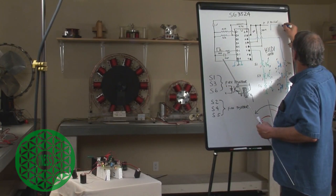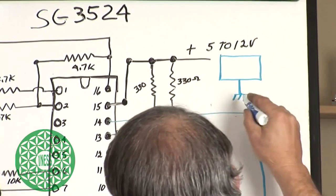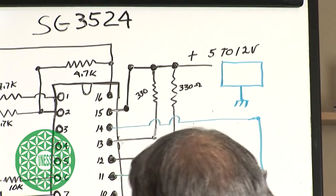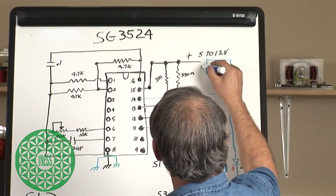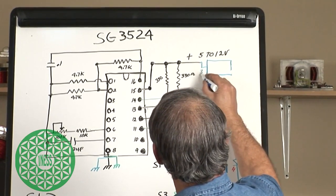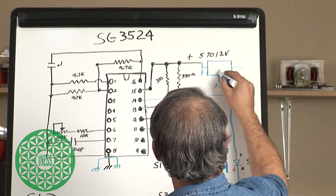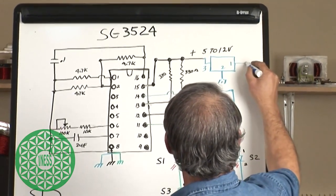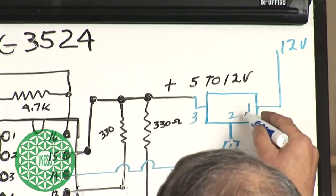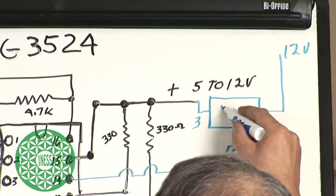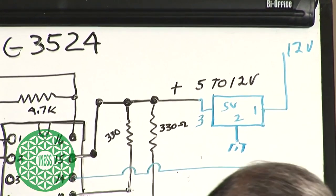This ground is the same as this ground right here. This would be pin 3, pin 2, pin 1, so you'll come in with 12 volts here, you'll regulate it down to 5, and that's what will run your oscillator.